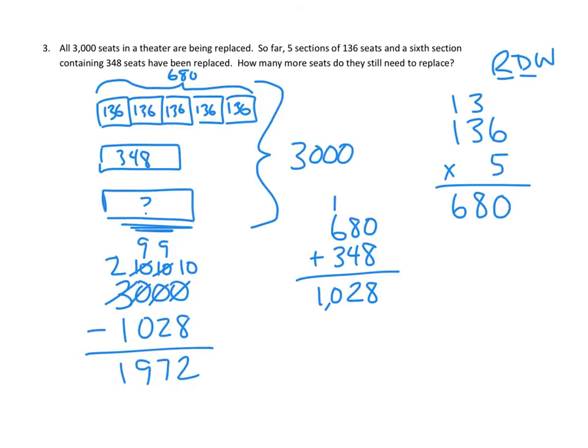Are we done? We are not done because we have to do the write portion of our strategy. And the write portion of our strategy is to say that there are 1,972 seats still to be replaced.